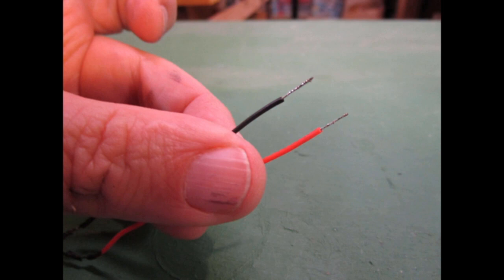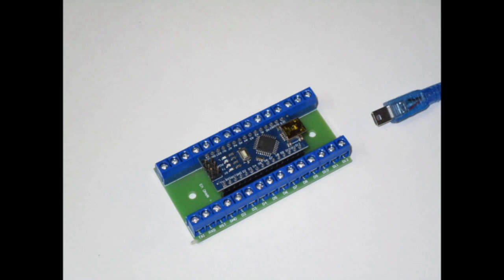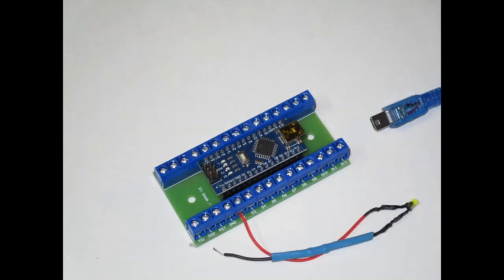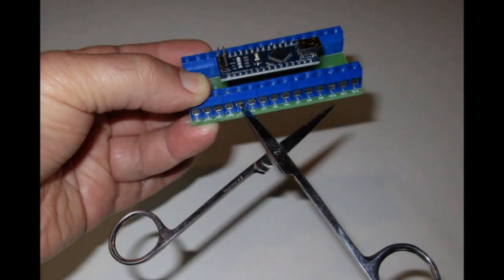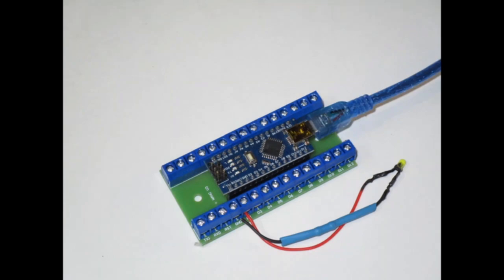I stripped about a quarter inch of insulation from the free ends of the wires and tinned the ends. Unplug the Arduino from the USB cable — I always unplug the Arduino when making electrical connections. Insert the Arduino Nano into the expansion board, making sure it's oriented correctly with the USB connector near the D12 pin. Raise the screw on pin D2 of the expansion board, insert the red wire and tighten the screw. Insert the black end into the socket labeled GND — this is the electrical ground. This completes all required electrical connections, so we can plug the USB cable back in.